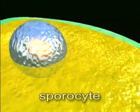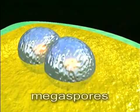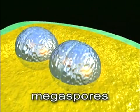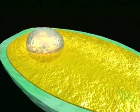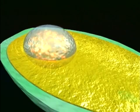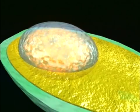Inside the megasporangium, the single sporocyte cell divides by meiosis to produce four haploid megaspores. However, three of these degenerate. The surviving megaspore enlarges, and its nucleus divides many times, but no walls are formed.